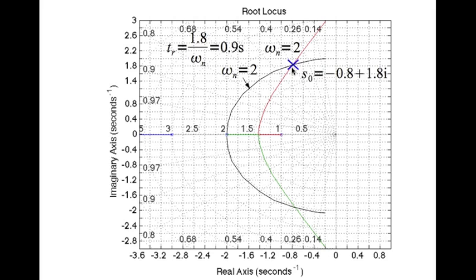Now for that value of s0, we can calculate the gain K, which here is Kp, given by 1 divided by the magnitude of the loop transfer function, which is in this case the transfer function of the plant evaluated at s0. I used MATLAB to compute that. You can do it using a calculator and I found K as 11.14.